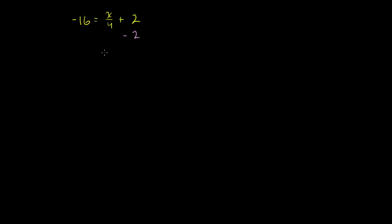We subtract 2 from the right and subtract 2 from the left. On the left-hand side, negative 16 minus 2 is negative 18. That is equal to x over 4. And then positive 2 minus 2 is just 0, so we don't even have to write that. So we have negative 18 is equal to x over 4.